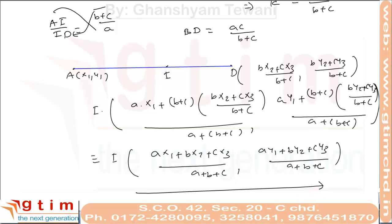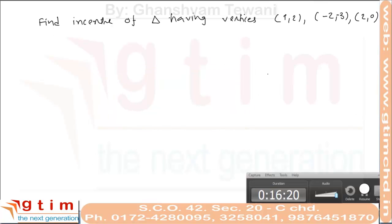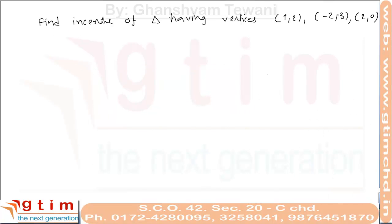So the incenter coordinates are ((a·x1 + b·x2 + c·x3)/(a+b+c), (a·y1 + b·y2 + c·y3)/(a+b+c)), where a, b, c are lengths of sides opposite to angles A, B, and C respectively. Now let's find the incenter of a triangle with vertices (1, 2), (−2, −3), and (2, 0).